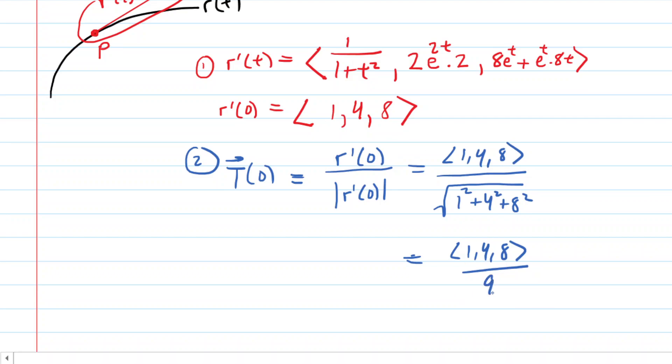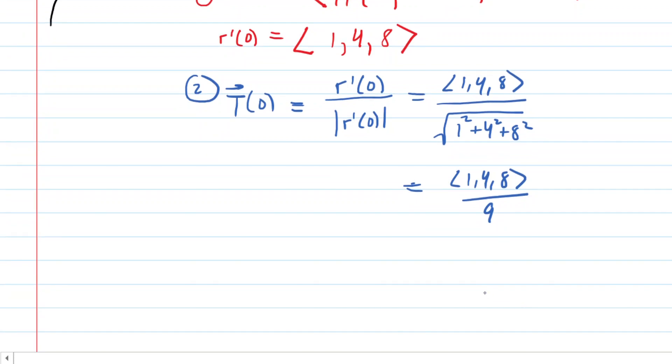And then all we need to do is divide the x, y, and z components by 9. So you'll have the x component 1 over 9, the y component 4 over 9, and the z component 8 over 9. And this is the correct answer to the question. This is the unit tangent vector.